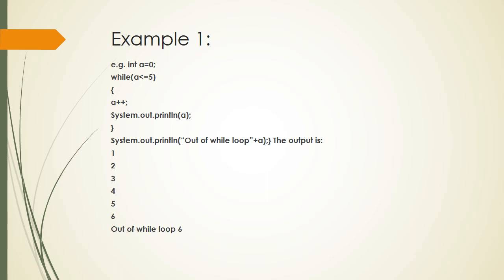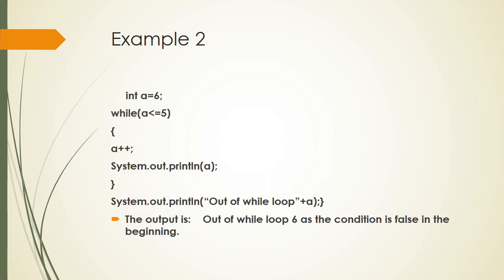We understand that if the condition is true, the loop will continue. Once the condition becomes false, the control will come out of the loop and give the message which is given outside the while loop. Another example: int a = 6; while (a <= 5). Here the initial value of a is 6, and 6 <= 5 is false in the beginning. Since while is an entry control loop, the control comes out and displays "out of while loop 6".